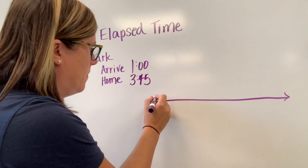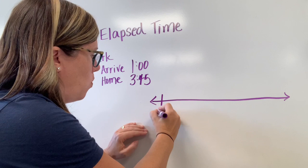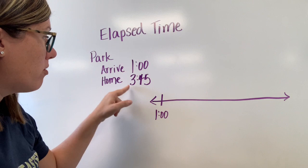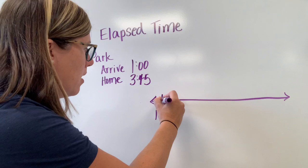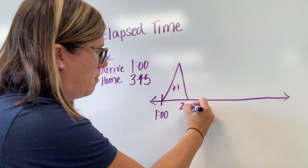We're going to start again with an open number line and start with the time that you started swimming. We're going to put one o'clock on here. When I see one o'clock to three o'clock I think I can add two mountains because there's two hours that go by.